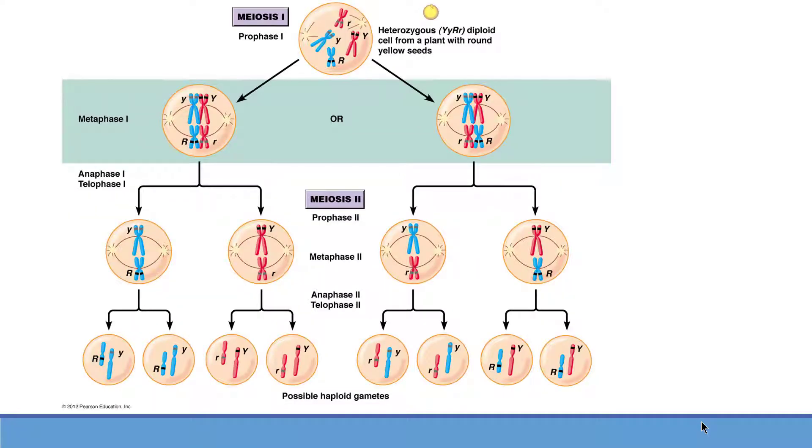Then in meiosis, the chromosome pairs move to opposite poles during anaphase. Now this phenomenon is quite similar to the law of segregation proposed by Gregor Mendel.